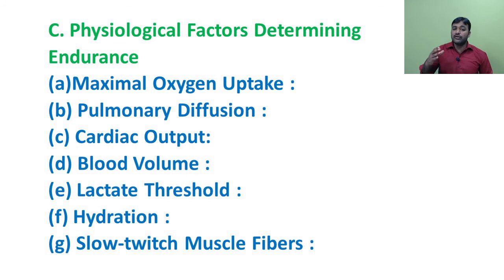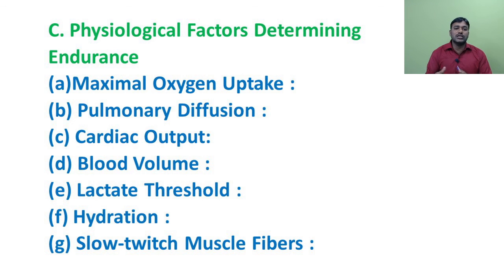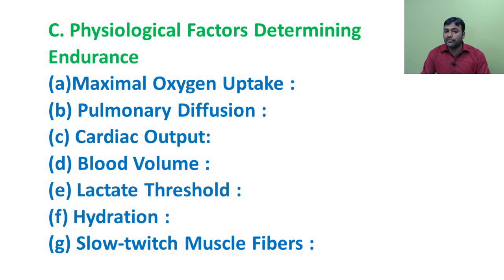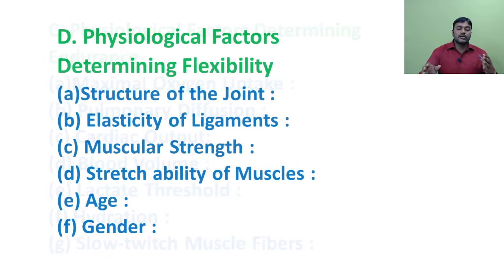With training, one can change the proportion of fibers between fast and slow-twitch muscle fibers. However, studies indicate that these changes are not permanent. The percentage of slow-twitch muscle fibers determines the endurance of the person.